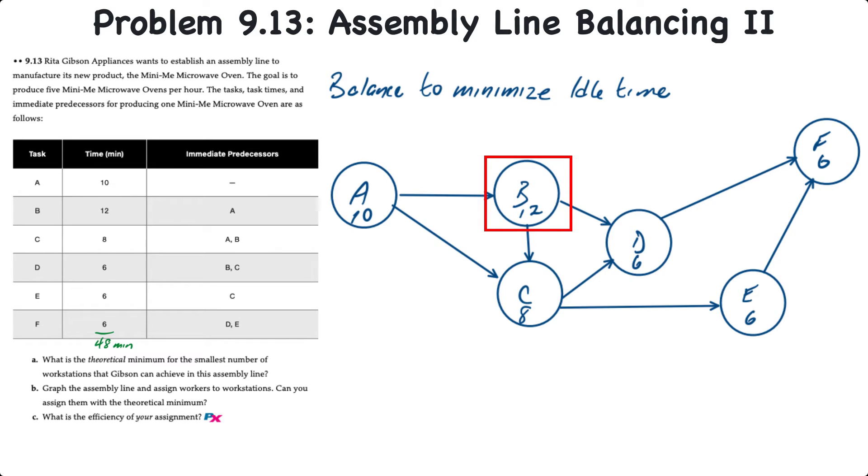Then we look at what we have left. We can see that activity A is at 10 minutes and can't be combined with activity C, which is the closest of proximity because C's task time of 8 minutes would cause the workstation to exceed the 12 minute cycle time. So we're going to have to take task A and make a workstation of its own.